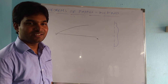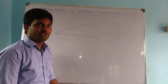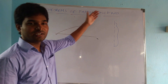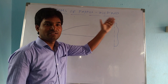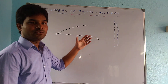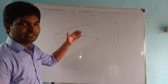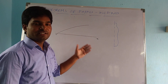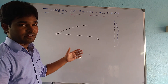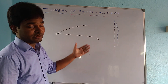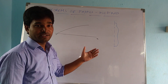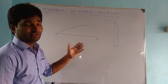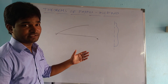Hello guys, this is Raja, back with a new video on the Theorems of Pappus and Guldinus. These are used to define the surface areas and volumes of plane figures, plane curves, and plane areas which are rotating about non-intersecting axes.